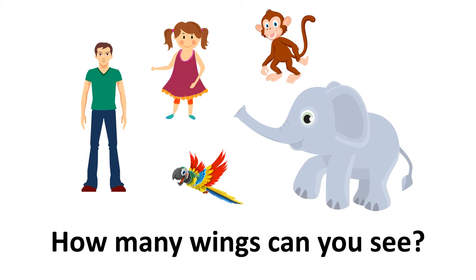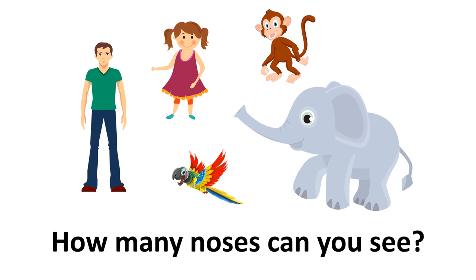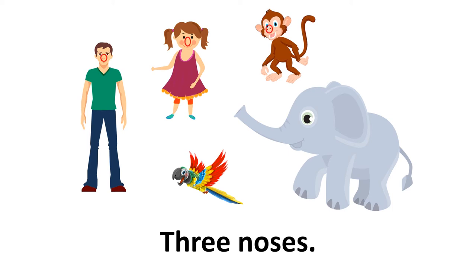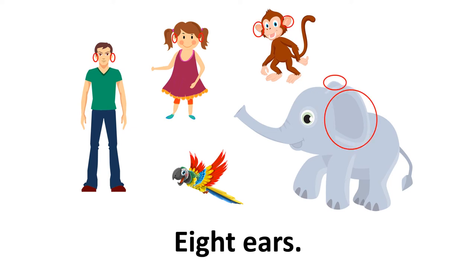How many wings can you see? Two wings. How many noses can you see? Three noses. How many ears can you see? Eight ears.